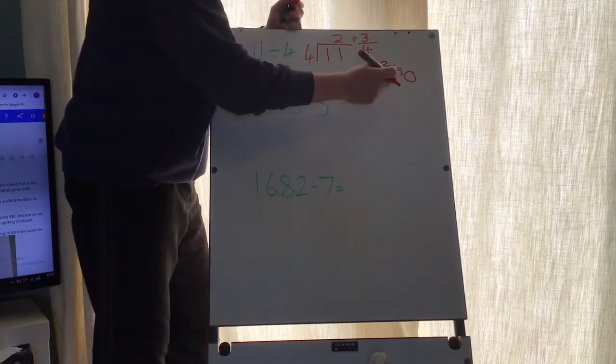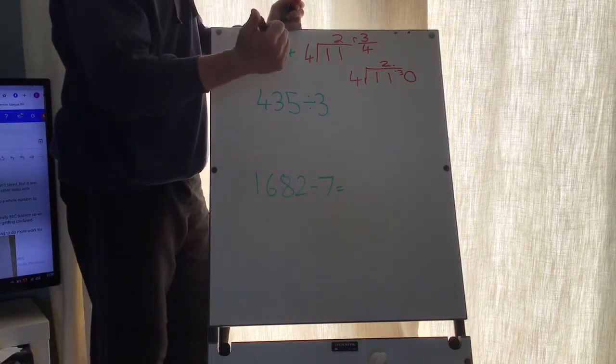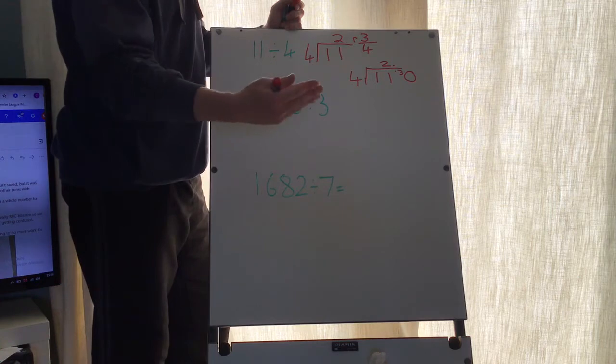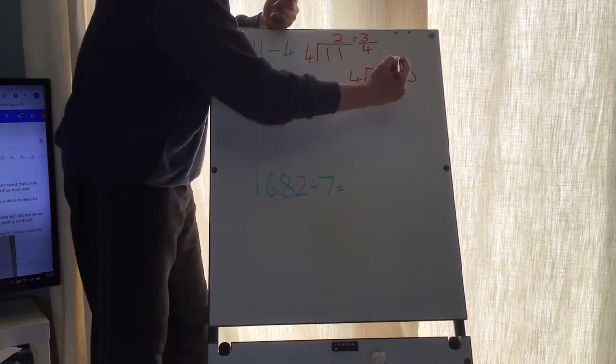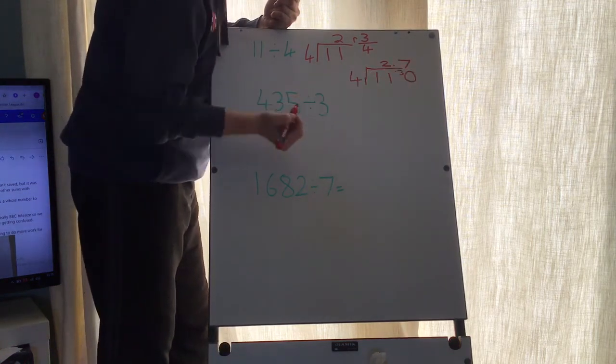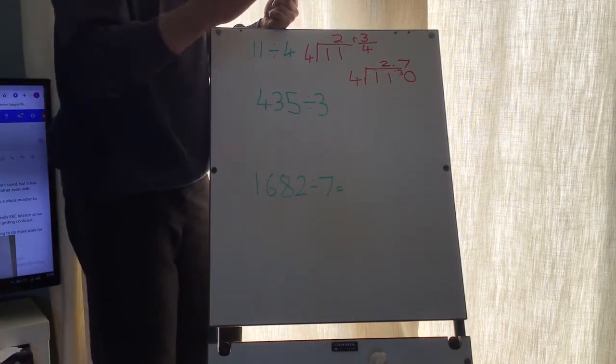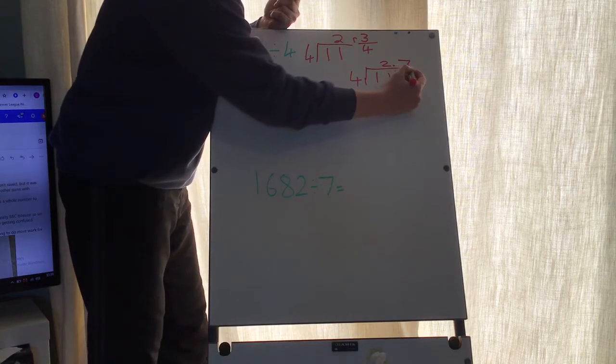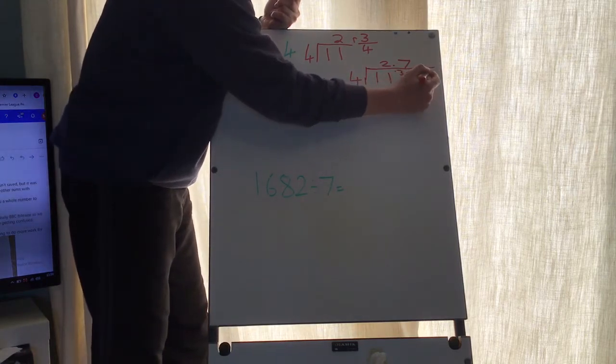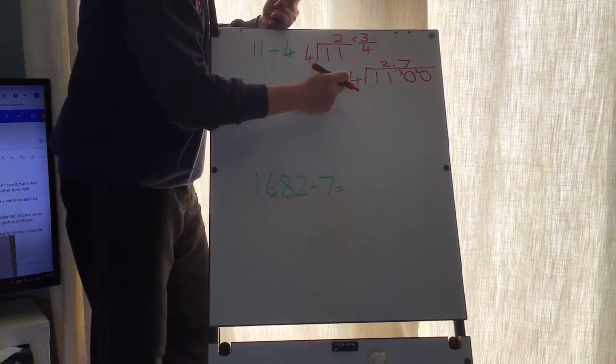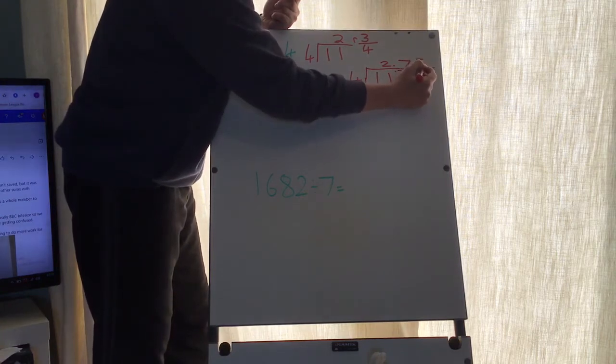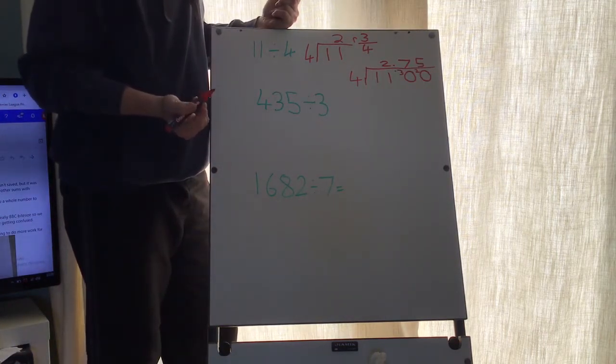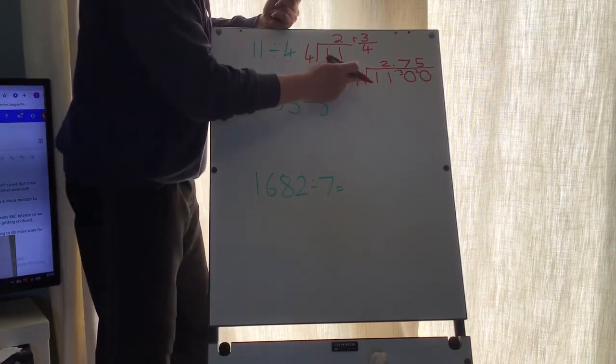4s into 30: 4, 8, 12, 16, 20, 24, 28, that's 7 jumps. It's 28 and we had 30, so the difference between 28 and 30 is 2. There's nothing here again, so we put a 0. 4s into 20 go 5 times. So if I want to be really accurate, 4 divided by 11 is 2.75.